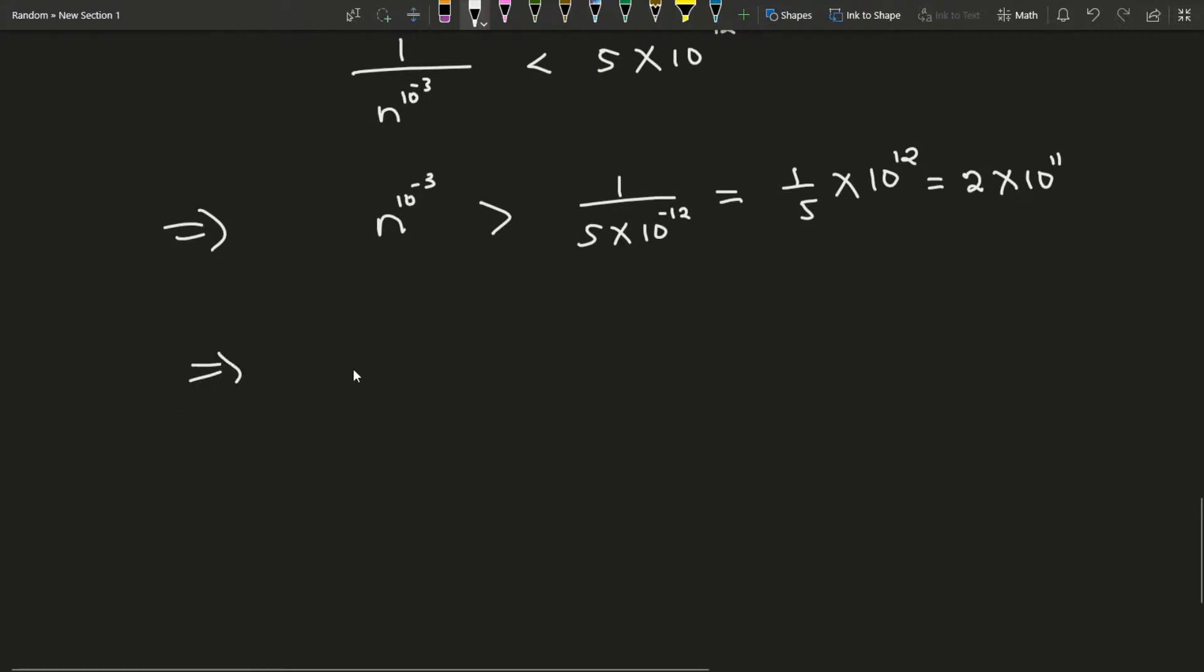So we have n to the 10 to the negative 3 is bigger than 2 times 10 to the 11. Take both sides to the power, divide by 1 over 10 to the negative 3, which is the same as raising to the 1000th power. So n is greater than 2 to the 1000 times 10 to the 11000.